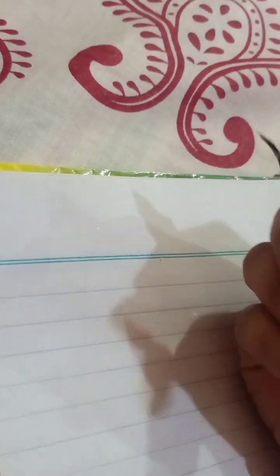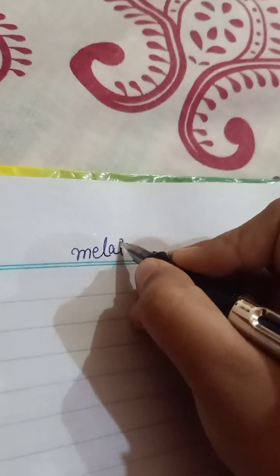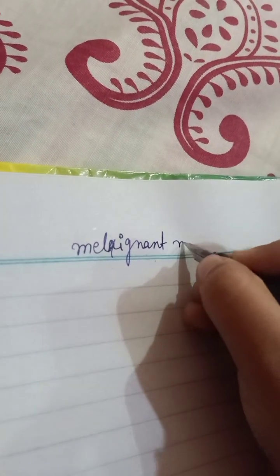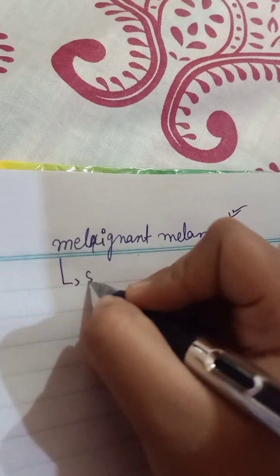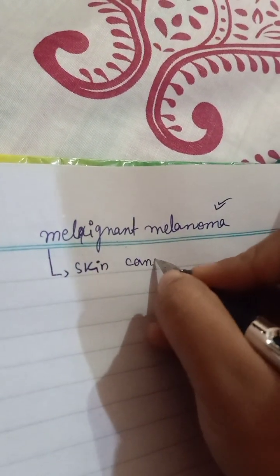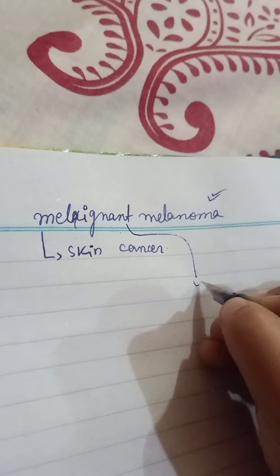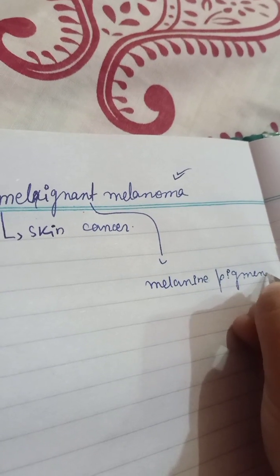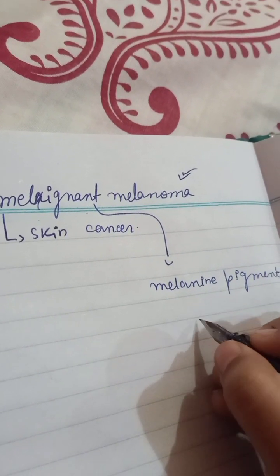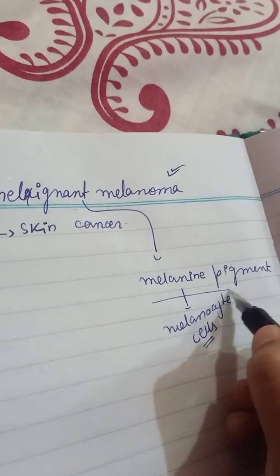If we talk about malignant melanoma, this is basically a skin cancer. It occurs when melanin is not produced properly. Melanin is the pigment that gives color or complexion to our skin, and it is produced by melanocyte cells — which are basically the skin cells that produce the melanin pigment.